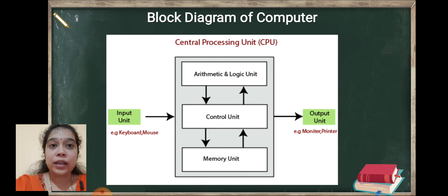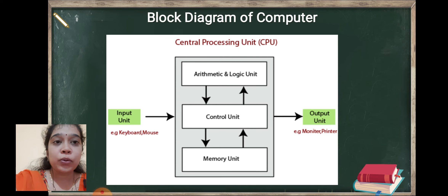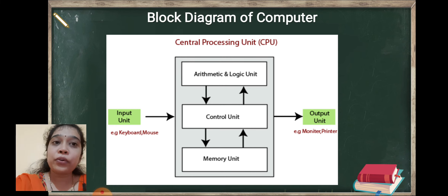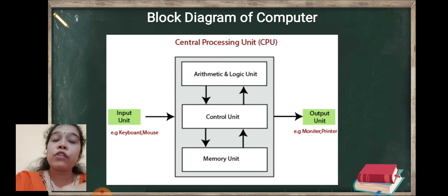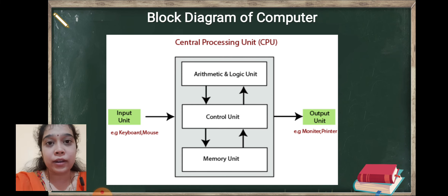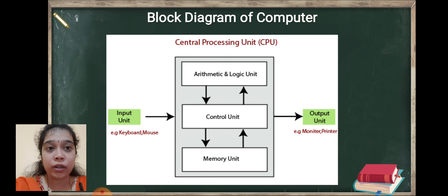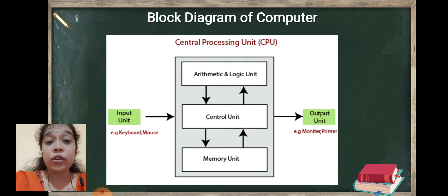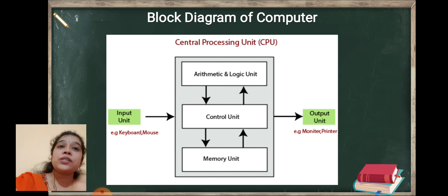अगर अपने को arithmetic operation perform करना है, तो input जो है वो CPU को देंगे। CPU जो है वो control unit के through काम करता है — input unit direct ALU से connected नहीं है। इसलिए input unit, control unit के through ALU में जाएगा। ALU उस पर arithmetic operations perform करेगा, और फिर जो भी output आया है, जो भी information मिली है, वो control unit को pass करेगा। फिर control unit जो भी output है वो output unit को देगा और फिर अपन उसको monitor screen के ऊपर देख सकते हैं। सेम वैसे ही अगर memory unit के साथ में कुछ perform करना है — data store करना है — तो control unit के through memory unit के साथ interact करेंगे और data store हो जाएगा।